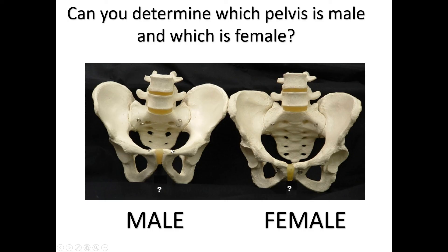For the female, the pelvis is going to be smoother overall. Their ileum is going to be wider, so their hips will be wider. The pelvic cavity is going to be a lot larger in the female, and that's to provide the wide birth canal needed for childbirth. Alright, so this is where we're going to stop for today, and I will see you in the final forensic anthropology lesson where we're going to be talking about long bones.